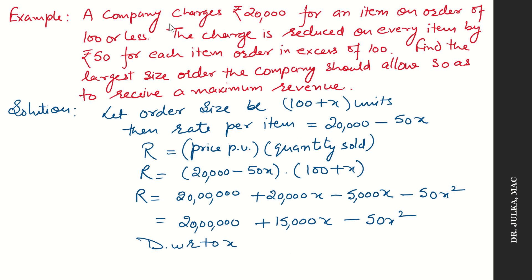Example 2. A company charges Rs 20,000 for an item on orders of 100 or less. The charge is reduced on every item by Rs 50 for each item ordered in excess of 100. Find the largest order size the company should allow so as to receive maximum revenue. So charges are 20,000 for an order of 100 or less. If the order is 100 plus 1, the charges are 20,000 minus 50. If the order is 100 plus 2, charges are 20,000 minus 50 into 2. So let the order size be 100 plus x, and the rate per item is 20,000 minus 50x.